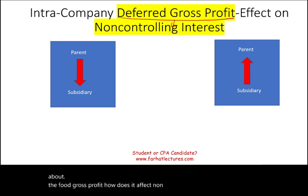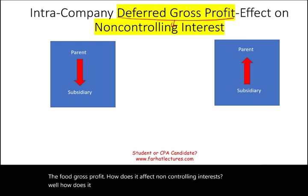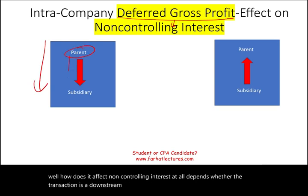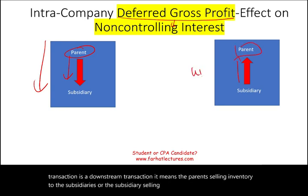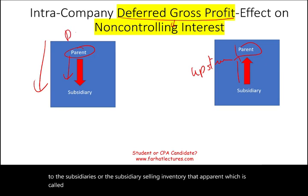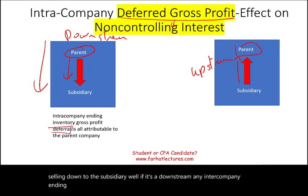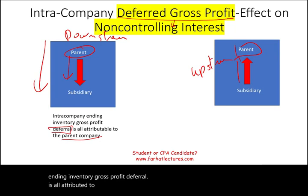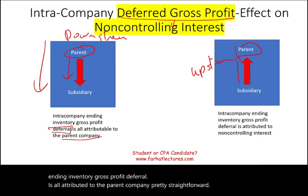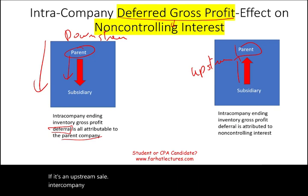How deferred gross profit affects non-controlling interest depends on whether the transaction is downstream or upstream. A downstream transaction means the parent is selling inventory to the subsidiary. In a downstream sale, any intercompany ending inventory gross profit deferral is attributed entirely to the parent company. In an upstream sale, the gross profit deferral is attributed to the non-controlling interest.